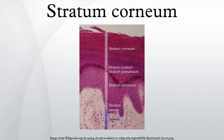Corneodesmosomes facilitate cellular adhesion by linking adjacent cells within this epidermal layer. These complexes are degraded by proteases, eventually permitting cells to be shed at the surface. Desquamation and formation of the cornified envelope are both required for the maintenance of skin homeostasis. A failure to correctly regulate these processes leads to the development of skin disorders.